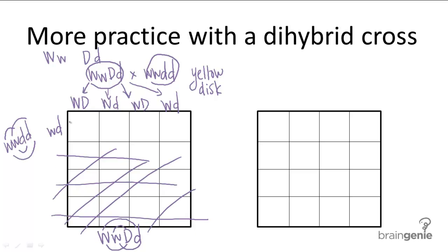And this becomes super easy once you start filling out. So, big W, little w, big D, little d. Big W, little w, little d, little d. Little w, little w, big D, little d. And, little w, little w, little d, little d.